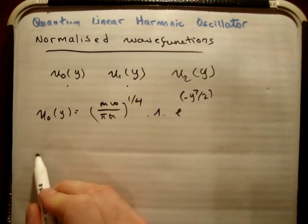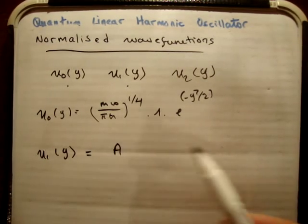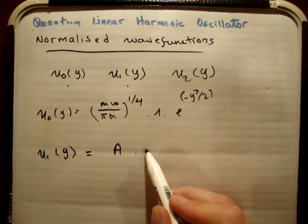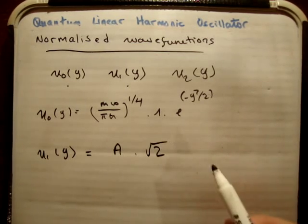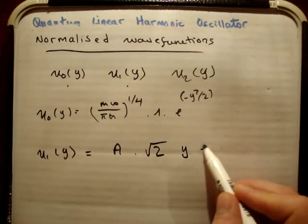Okay, then we're going to have U1 of y was equal to that same constant, and I'm just going to call it A. So this A, this time we had root 2, and we had y times e to the minus y squared over 2.